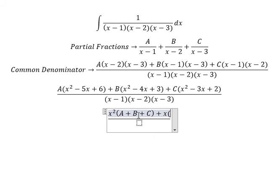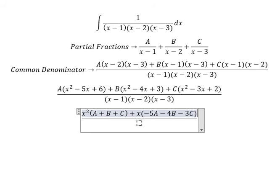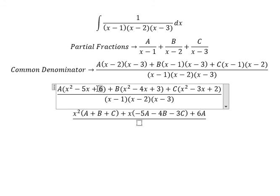For the x term, we put negative 5A, negative 4B, and negative 3C. For the constant we have 6A, number 6 multiplied by A, number 3 multiplied by B, and so on.